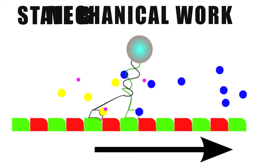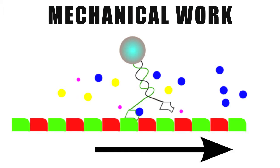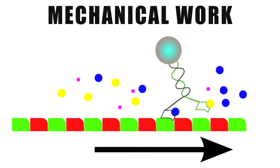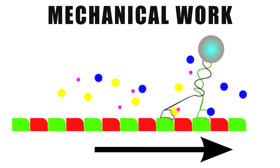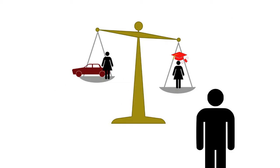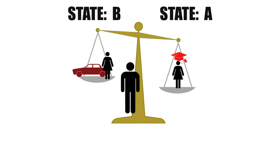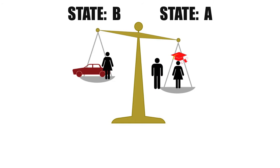A key difference with macroscopic machines is that they're influenced by random fluctuations. To understand this, let's return to the dating analogy. This time, a guy is not sure which girl to date. The guy will date the first girl; however, he'll also date the other. Now he's dating two girls at once.